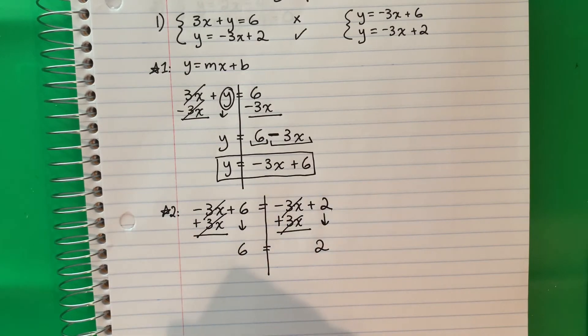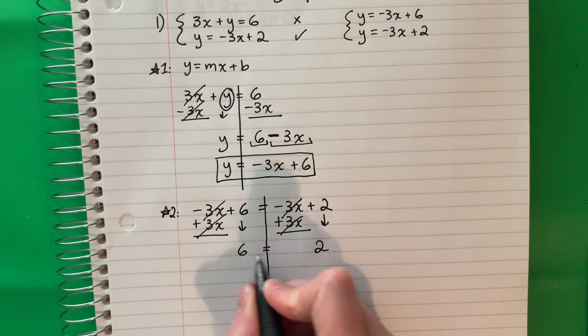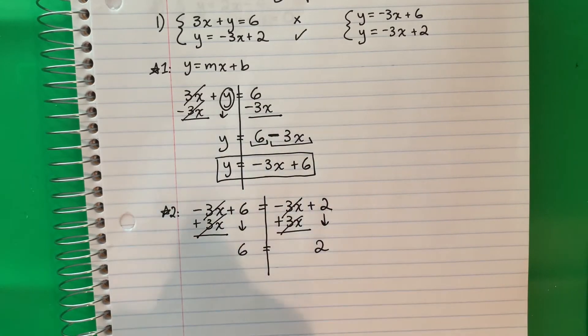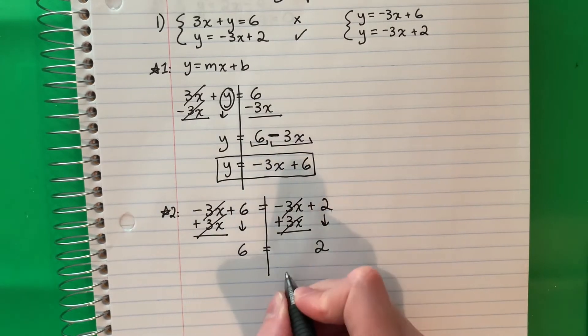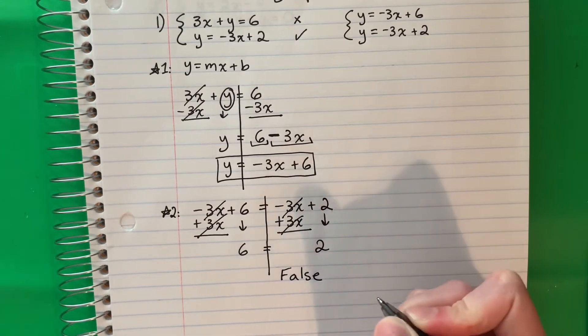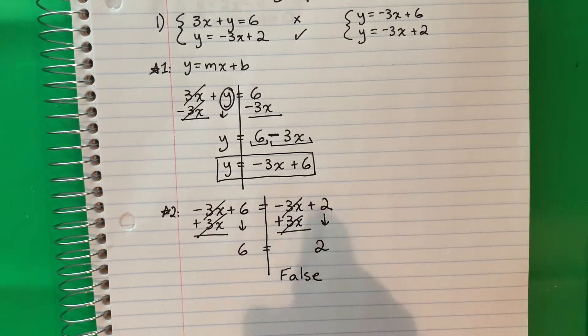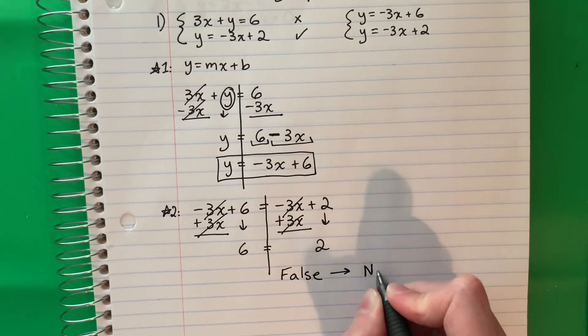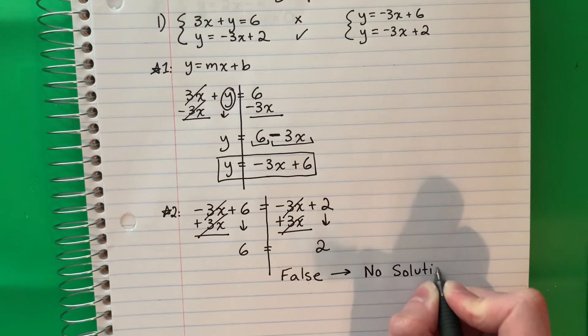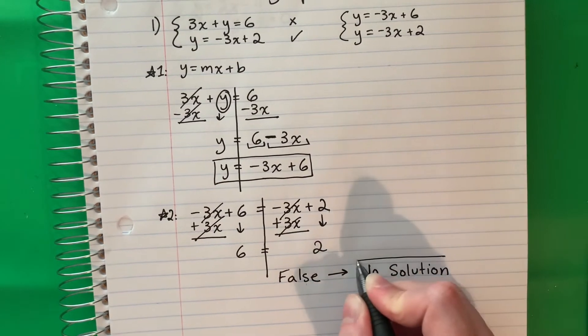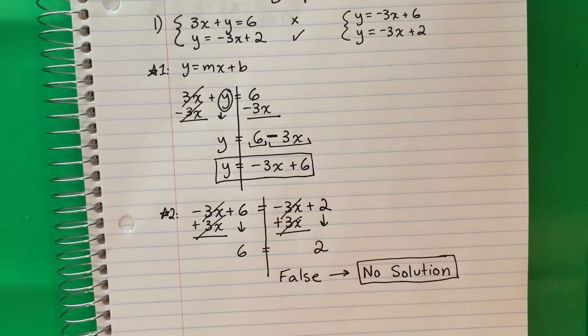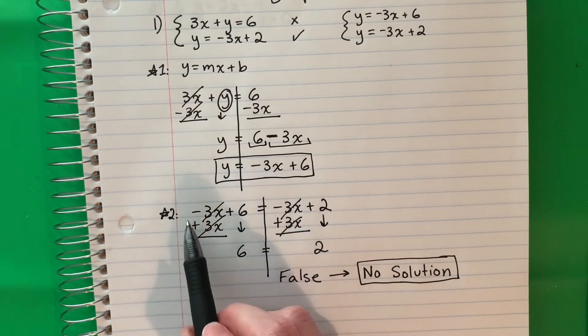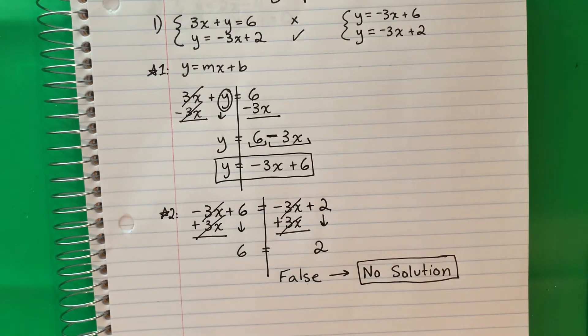Now I'm just going to see if it's true or false. 6 is equal to 2. Is that true or false? False. If your answer is false, your answer is no solution. So this is your final answer. No solution.